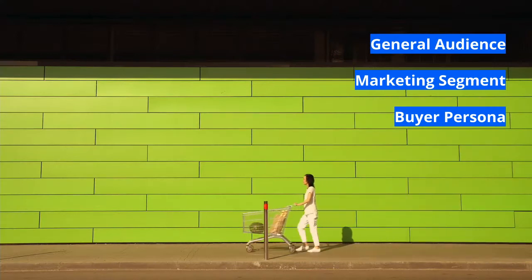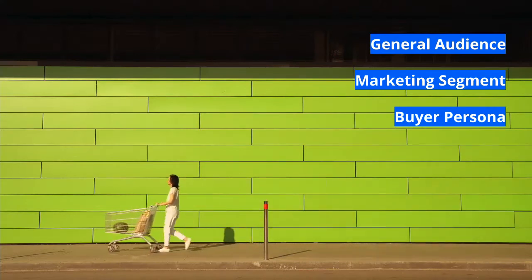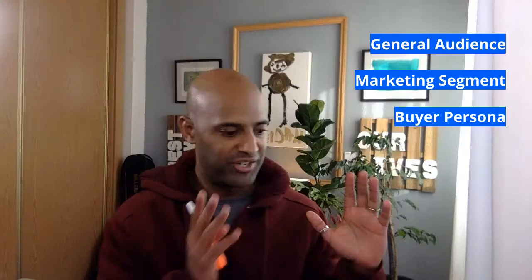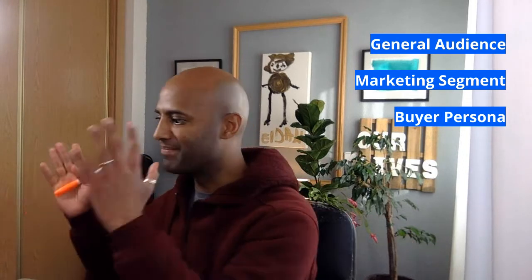Buyer personas are individuals with specific characteristics across your target audience. You can think of them as John the architect, Jennifer the lawyer and mother of three, and Mike the developer — each with certain characteristics. You think about their concerns, what moves them to buy something, to stay with a product or vendor, and what their concerns are.